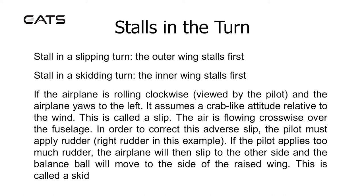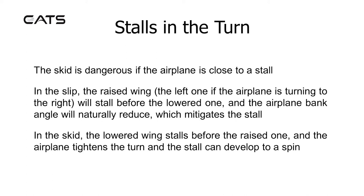If the aeroplane is rolling clockwise (viewed by the pilot) and yaws to the left, it assumes a crab-like attitude relative to the wind — this is called a slip. To correct adverse slip the pilot must apply right rudder. If too much rudder is applied the aeroplane will slip to the other side — this is called a skid, and is dangerous if the aeroplane is close to a stall. In the slip the raised wing stalls before the lowered one, and the aeroplane will bank naturally to mitigate the stall. In the skid the lowered wing stalls before the raised one, the aeroplane tightens the turn and the stall can develop into a spin.